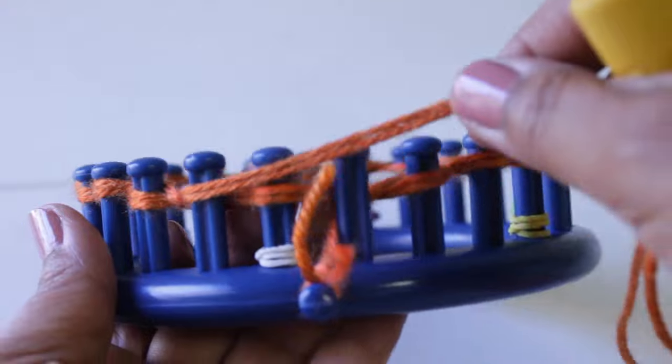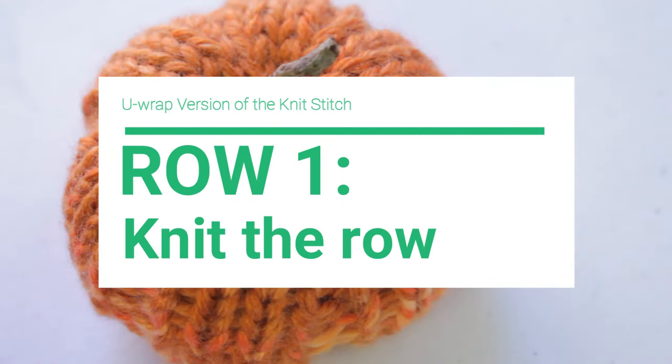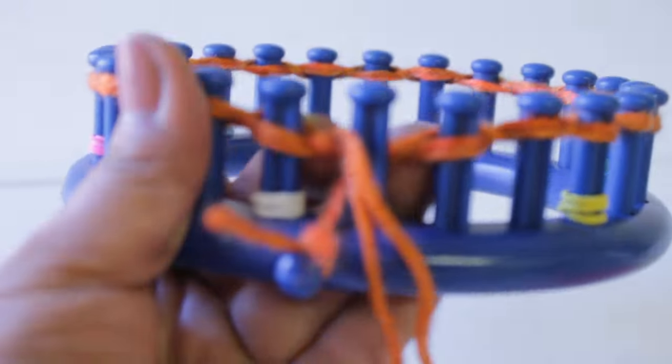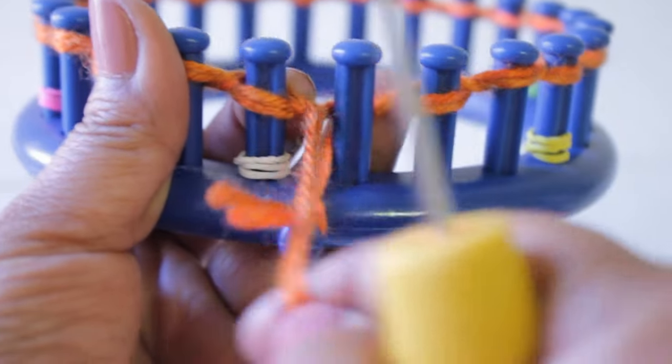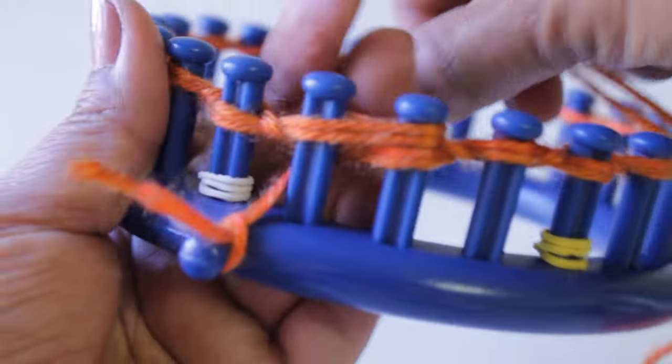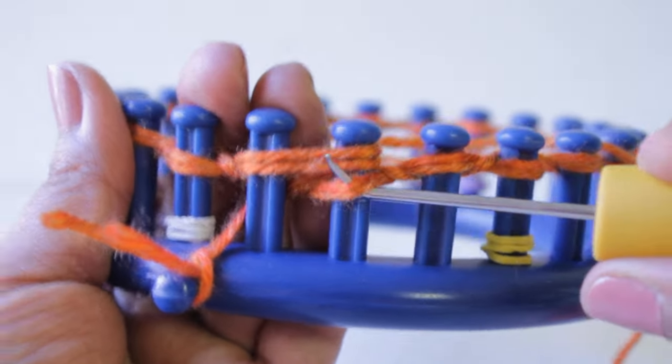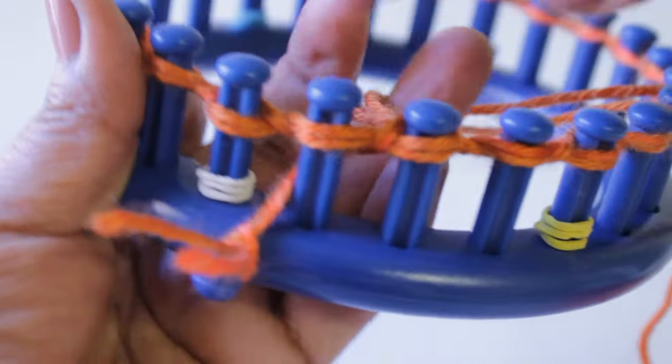When you knit off peg 24, you're done with your cast on and you're ready for row one where you're just going to knit the row. Peg one does not have a loop, so you're gonna take your yarn and lay it flat over pegs one and two. And then you're gonna knit off peg two. And we're using the Uwrap version of the knit stitch. So you half wrap and knit off.